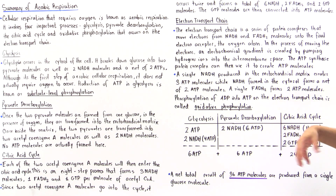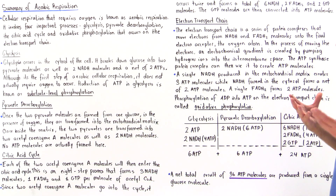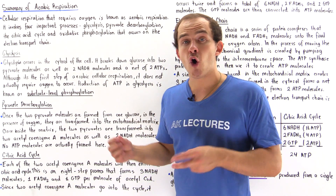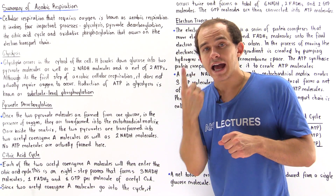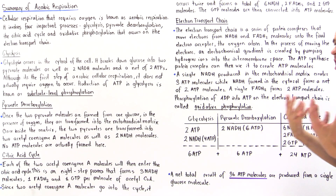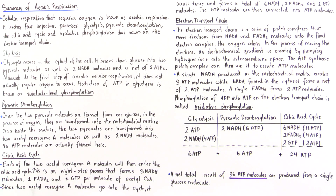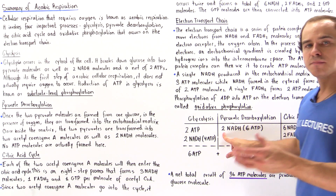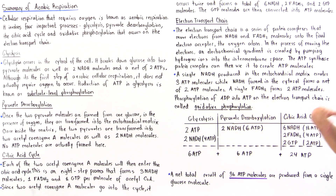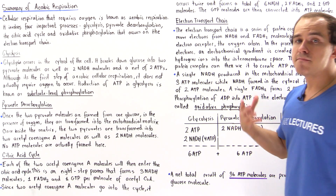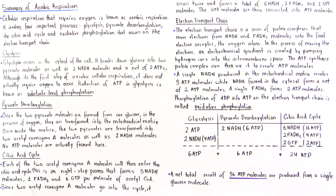For pyruvate decarboxylation: this process does not form ATP molecules directly, but it forms two NADH molecules. Since each NADH formed in the mitochondrial matrix produces three ATP molecules on the electron transport chain, we have two multiplied by three, giving six ATP molecules formed indirectly as a result of pyruvate decarboxylation.